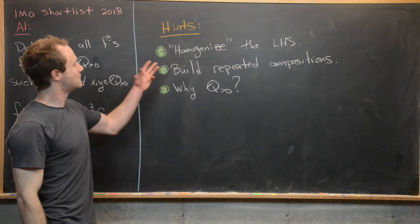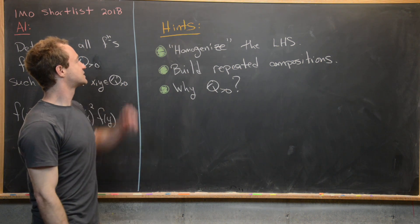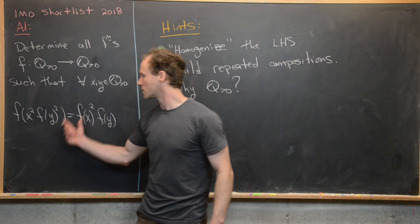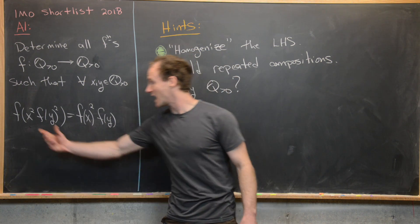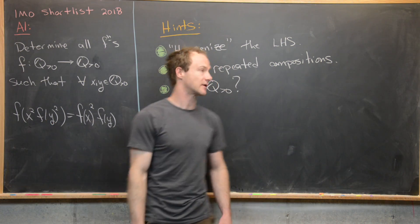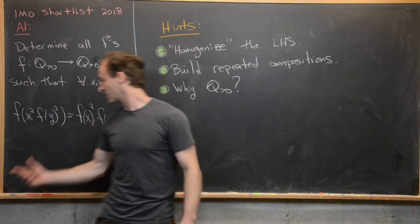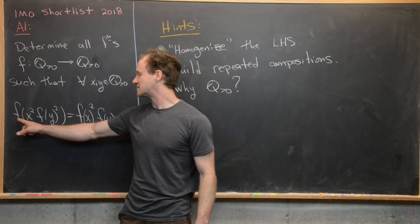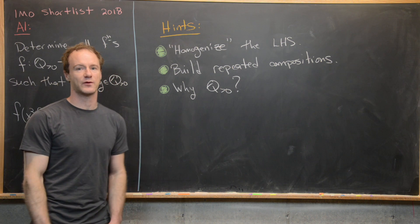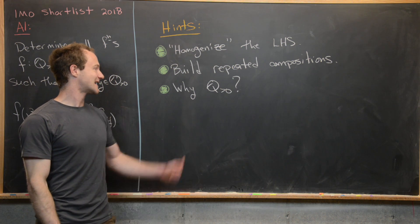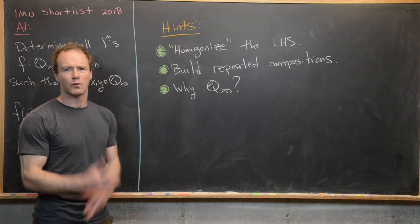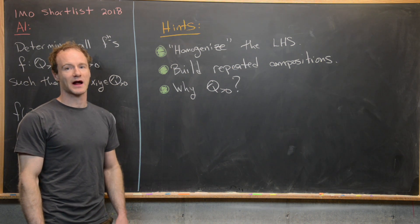Before we look at the solution, maybe try it on your own with these couple of hints. The first hint is to homogenize the left-hand side of the equation — notice we have two things squared inside f on the left-hand side; is there a way to make them look similar? Next, notice the left-hand side involves f inside of itself, so can we build a repeated composition of f with itself? Finally, why are we working over the positive rational numbers rather than the real numbers?